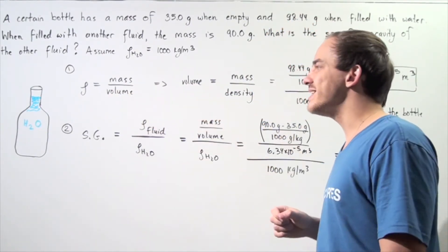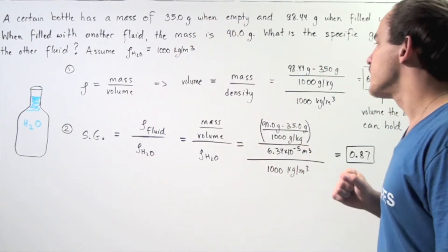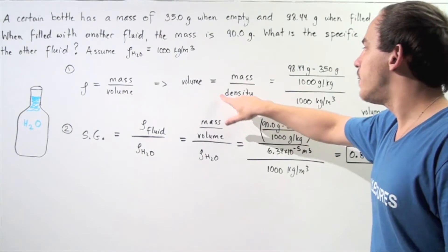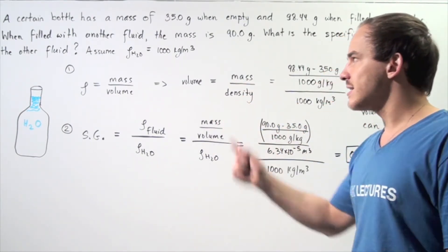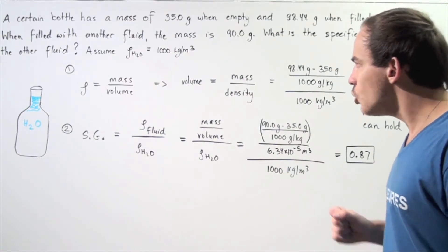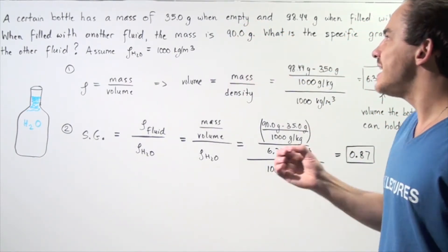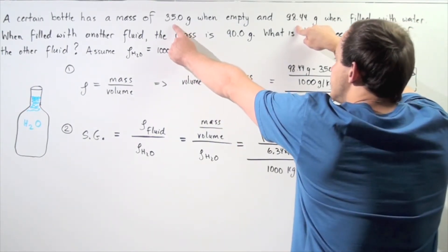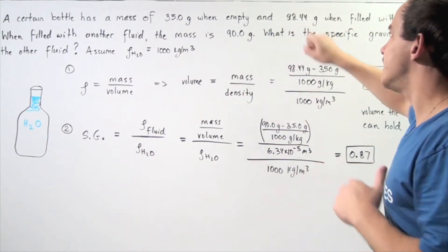We see that volume is equal to the mass of the water in the container, in our bottle, divided by the density of water. So, we know what the density is: 1,000 kilograms per meter cubed. And that means to find the mass, we simply take the difference of these two quantities and divide that by 1,000 to convert our grams to kilograms.